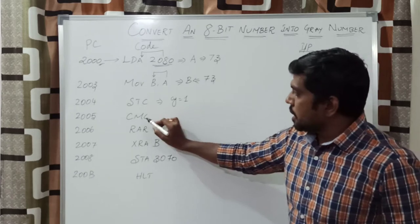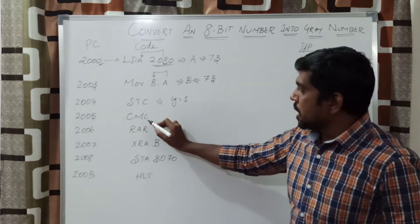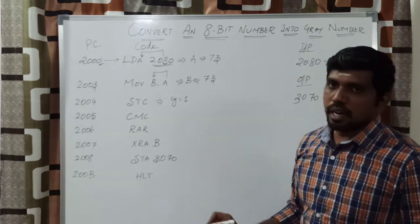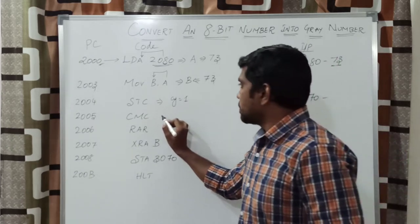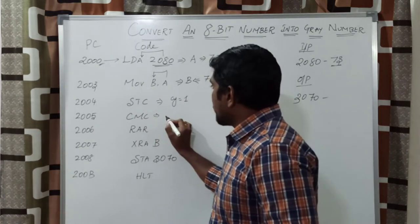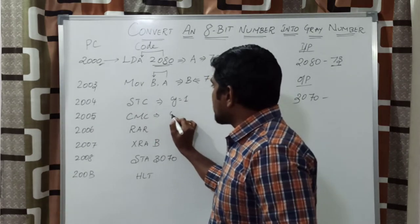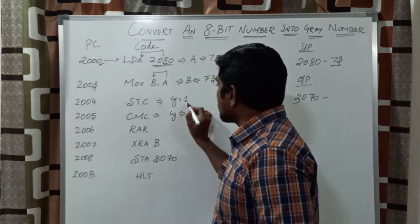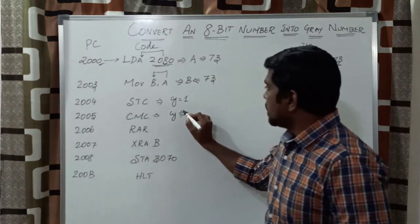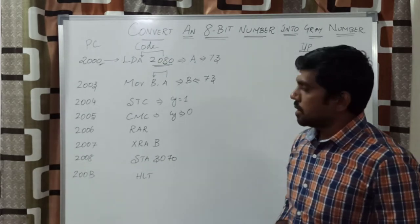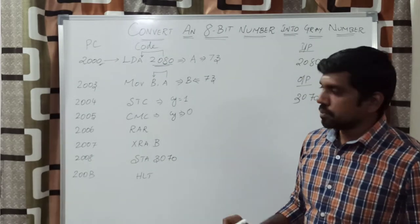The next instruction is CMC, which complements the carry register. After execution of this instruction, you take the 1's complement, so the carry bit is set to 0.